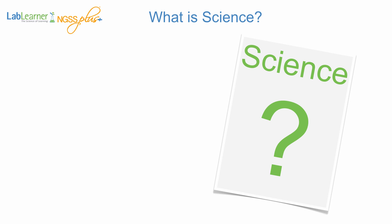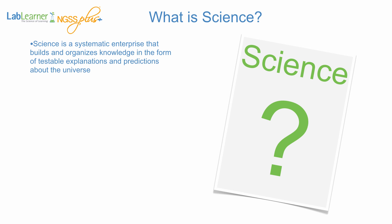Only by asking ourselves this question can we understand what it is that we want our students to know and be able to do with science. Science is a systematic enterprise that builds and organizes knowledge in the form of testable explanations and predictions about the universe. This means that science is an active process of experimentation.